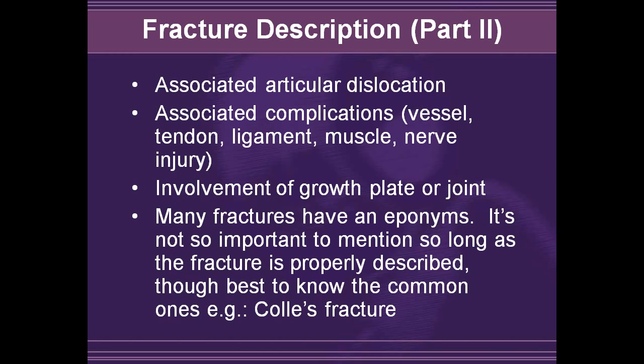Other complications to describe include vessel, tendon, ligament, muscle, or nerve injury. Involvement of growth plates in children and involvement of joints are also important. Many fractures have eponyms — named after the person who first described them or for something reminiscent of their appearance. It's not as important to mention the eponym as long as you describe the fracture properly, but it is nice to know some common ones, such as Colles' fracture, which is a type of wrist fracture.